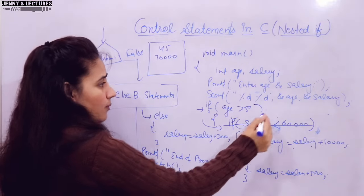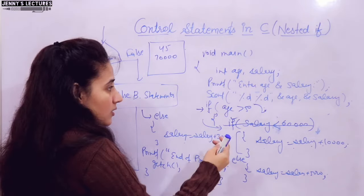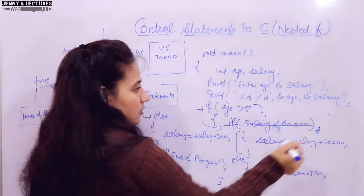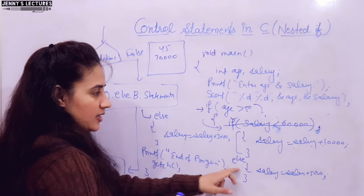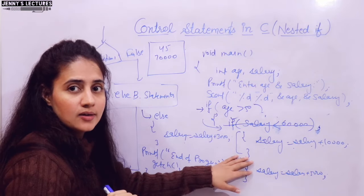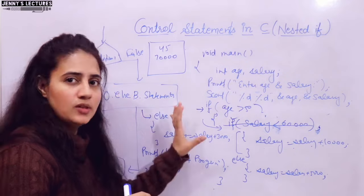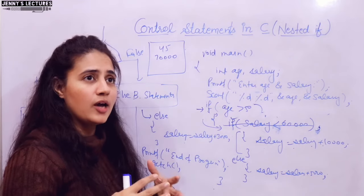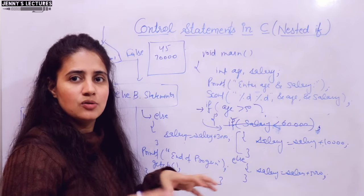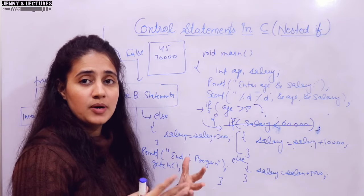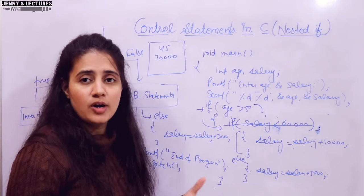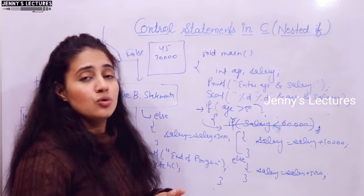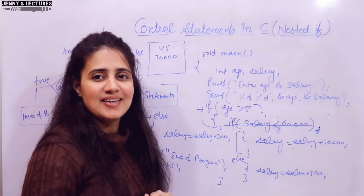Try experiments with these programs — put a semicolon and see what output you get, remove the else and check, and so on. Write small programs with these experiments. Better to write programs with pen and paper first, then switch to your laptop. Practice hands-on to understand these concepts without memorizing them. In the next video, I'll talk about else-if ladder statements. See you then — bye!